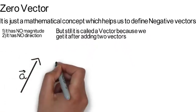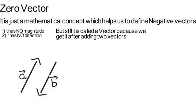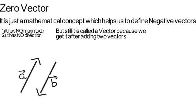For example, if there are two vectors, A vector and B vector, which are equal in magnitude and opposite in direction, the sum of these two vectors will be equal to zero vector. How do we add two vectors? We take the tail of one and place it on the head of another. The third side of the triangle will be equal to the sum of these two vectors.